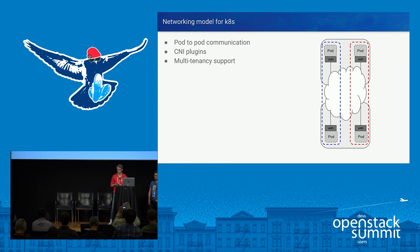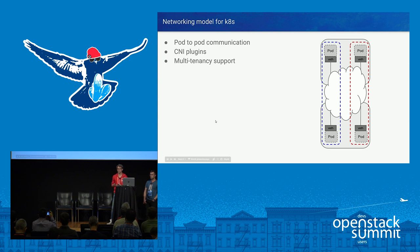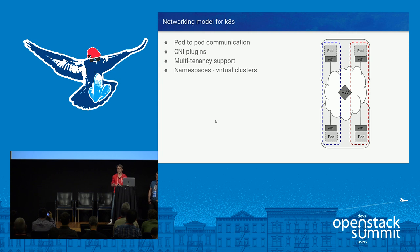The CNI driver handles how the veth pair is set up, how to connect it to some networking gear — like bridges in Kuryr's case or routing setup in Calico's case — and also sets up the underlying infrastructure. Kubernetes also implies a multi-tenancy model where every pod has a label indicating which namespace it belongs to. Networking technologies can leverage this labeling to set up multi-tenancy isolation between tenants. Calico provides not only routing but also multi-tenancy isolation. For example, you can set up Calico policies to firewall traffic between pods, so you can restrict communication between pods of different namespaces.